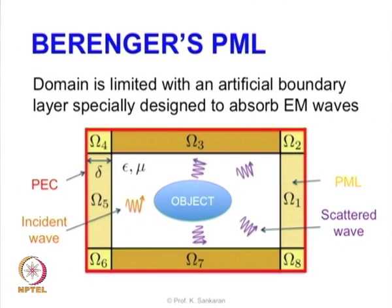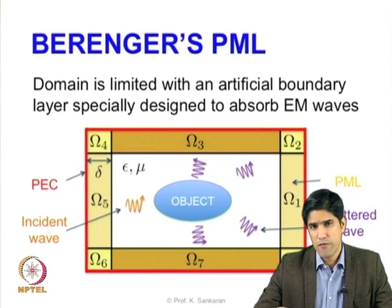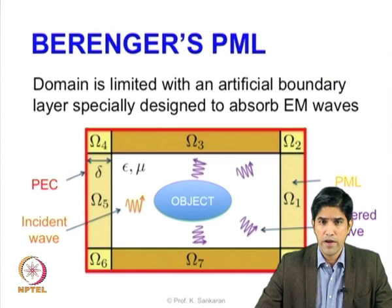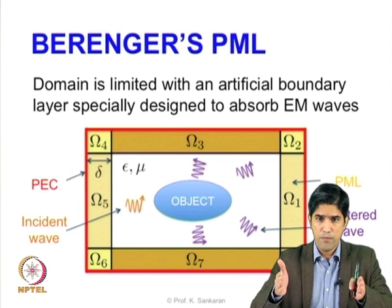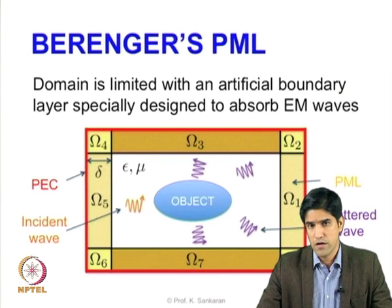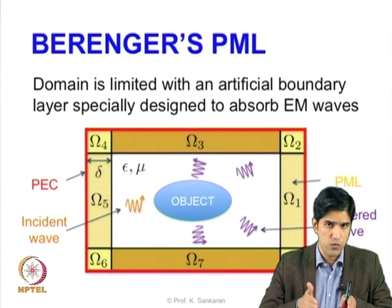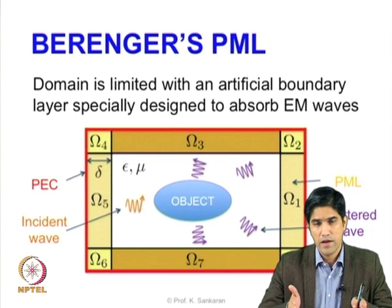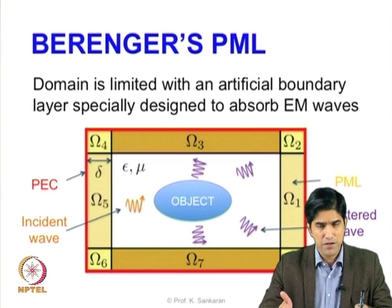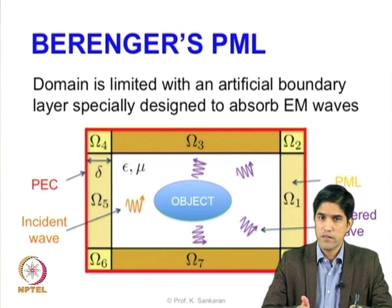This was the problem of the finite difference method since its inception, but that changed in 1994 when French scientist Berenger introduced the perfectly matched layer (PML). Instead of putting the boundary at a very far away distance, you can place it very close to the scatterer, and by adapting the parameters inside the layer you match it to the actual domain of interest — perfectly matched to the free space.